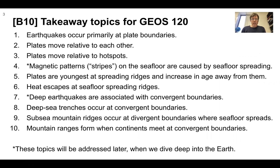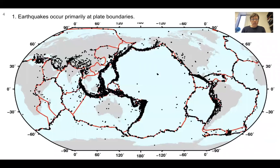I'll present the takeaway topics first. We're not going to state these now, but we'll come back to them at the end. First is that earthquakes occur primarily at plate boundaries. We can see here that if we connect the dots on the map, we more or less get most of the plate boundaries — all types of plate boundaries as shown here.